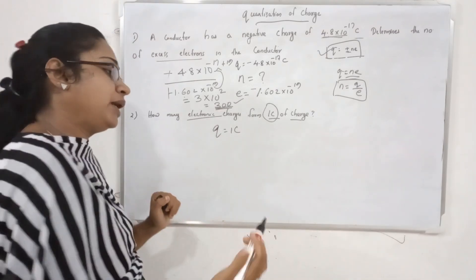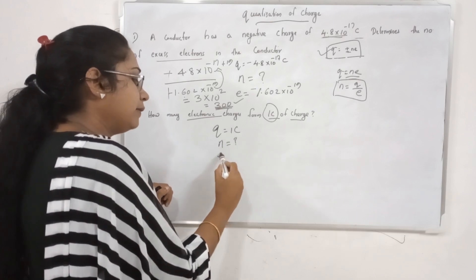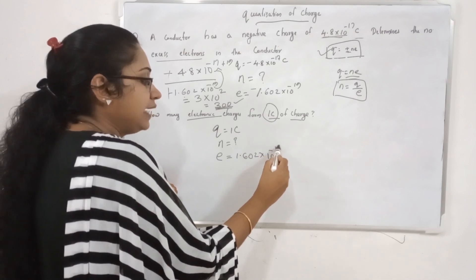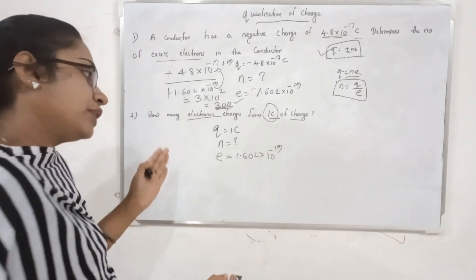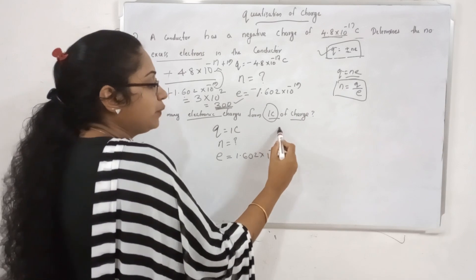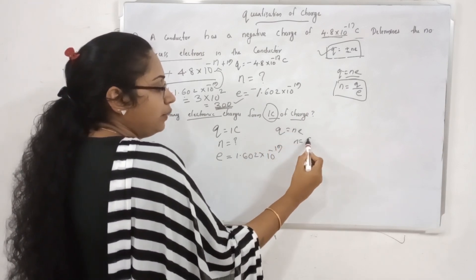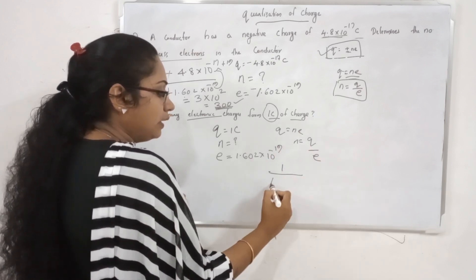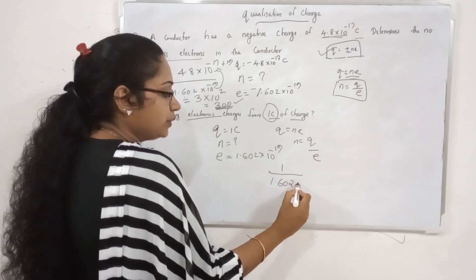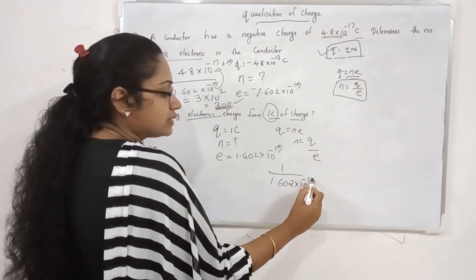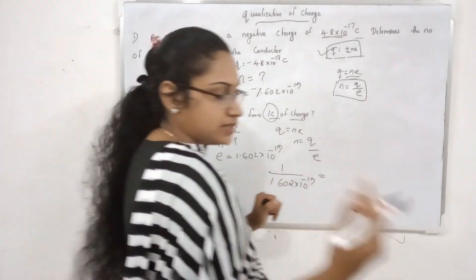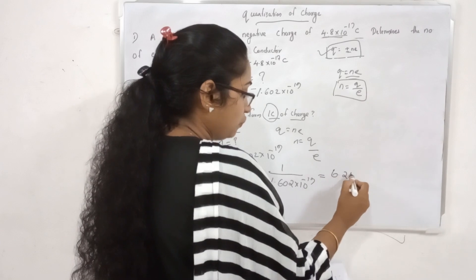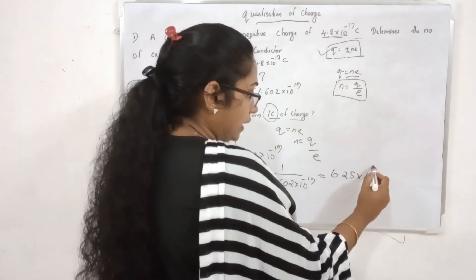Let's take n. e is equal to 1.602 × 10⁻¹⁹ coulombs. The equation is directly Q = n·e. Therefore, n is equal to Q divided by e. So n = 1 divided by 1.602 × 10⁻¹⁹. The answer is 6.25 × 10¹⁸.